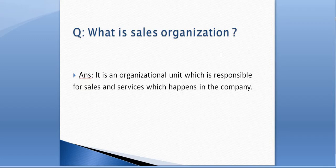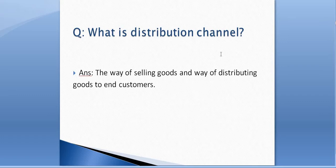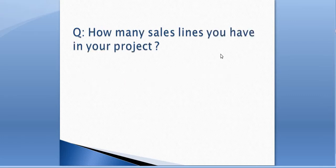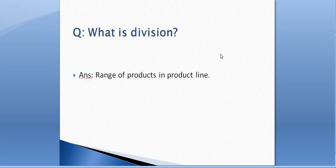What is a distribution channel? It is a way of selling goods and distributing goods to the end customer. What is a sales line? A sales line is a combination of sales organization and distribution channel. In interviews, the interviewer may ask you how many sales lines you have in your project, so prepare yourself and have a specific number ready to answer this question.